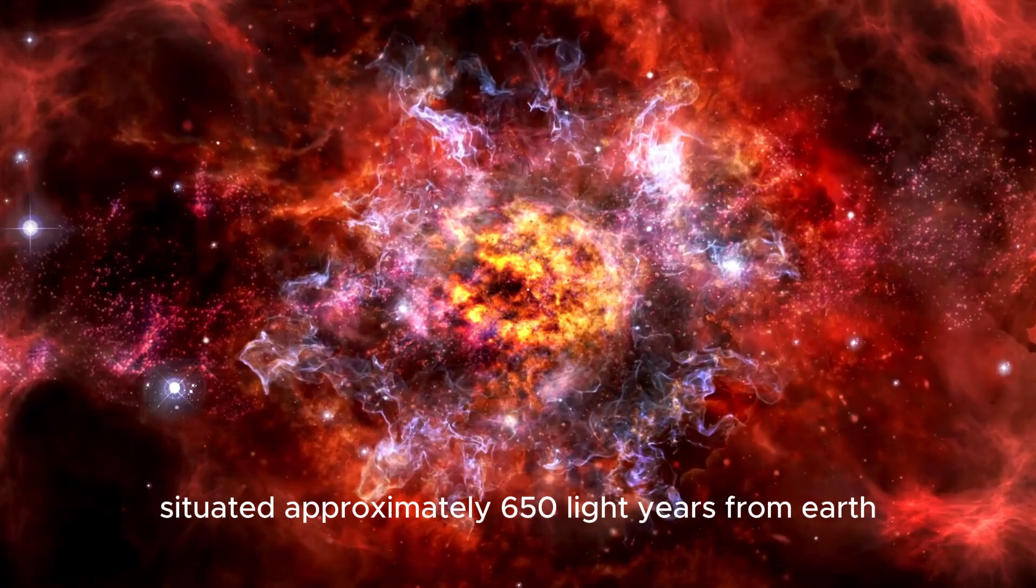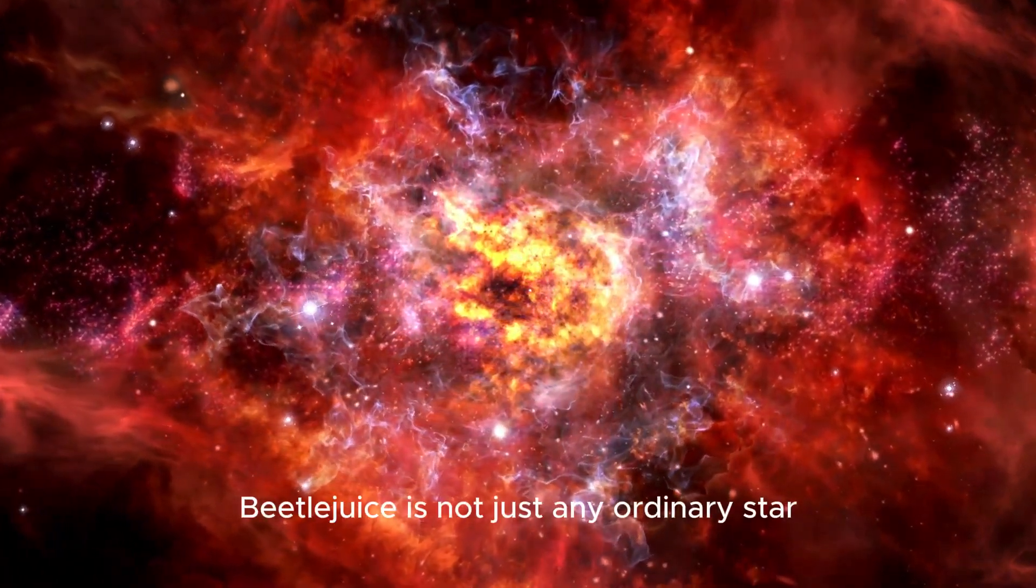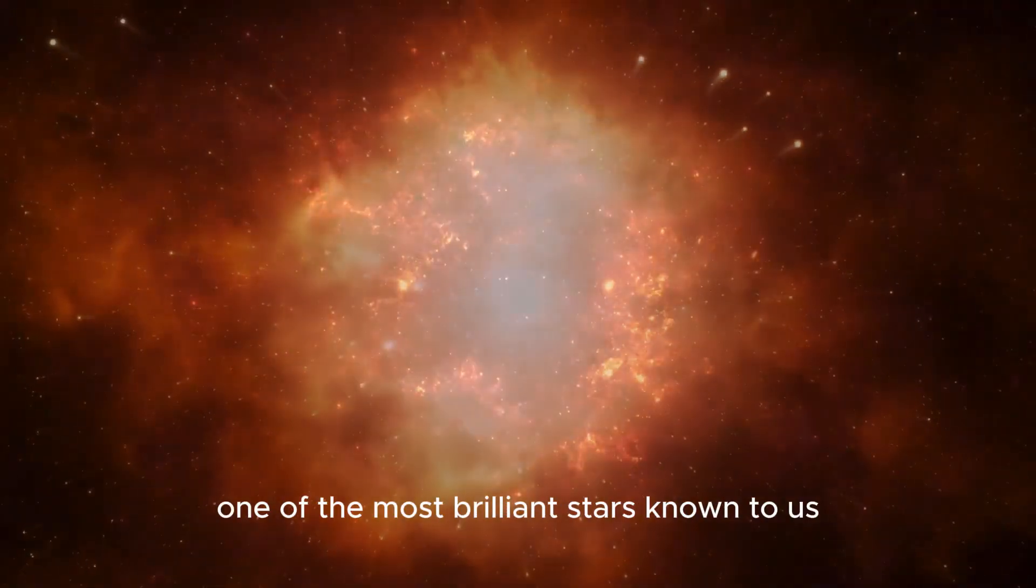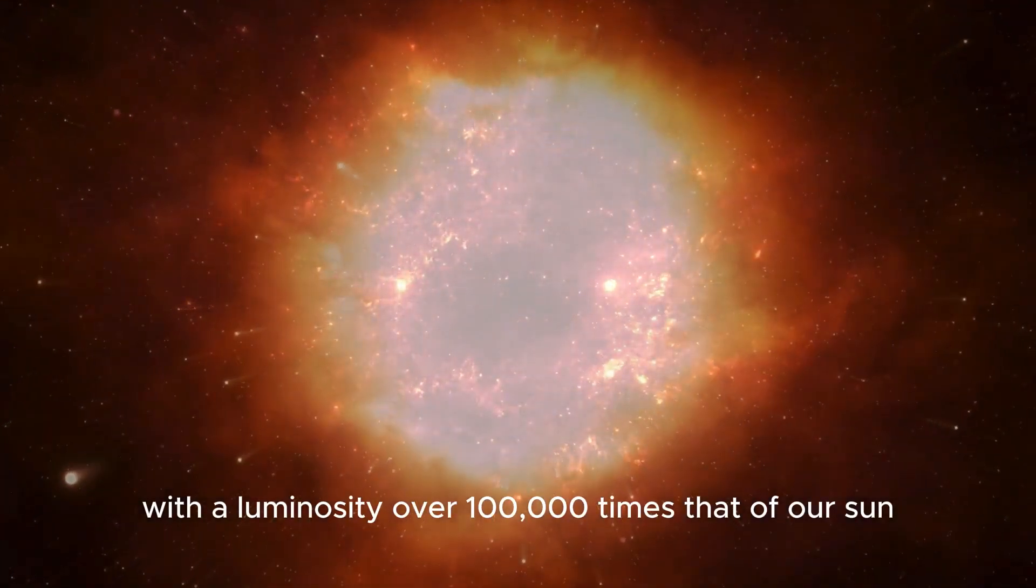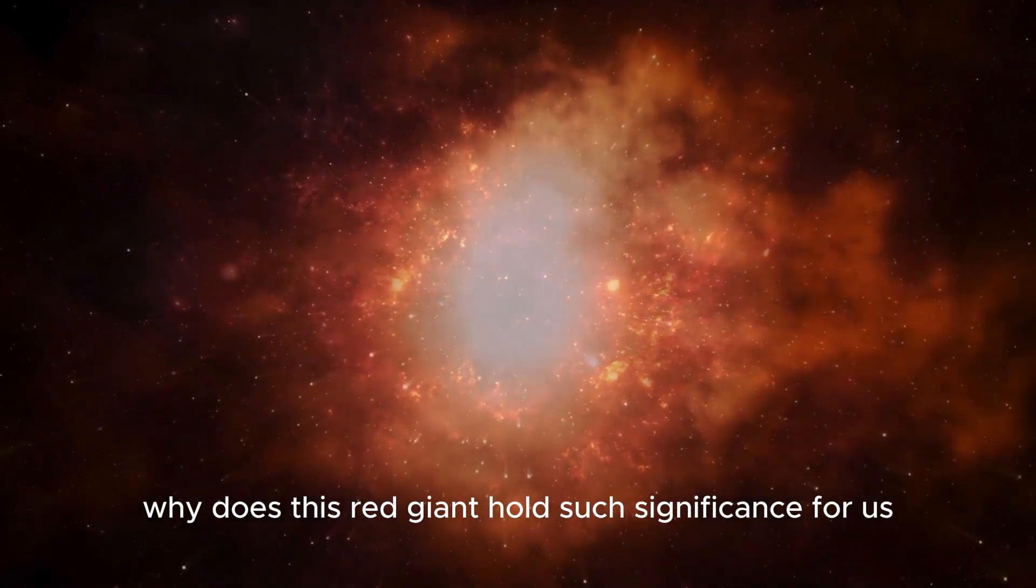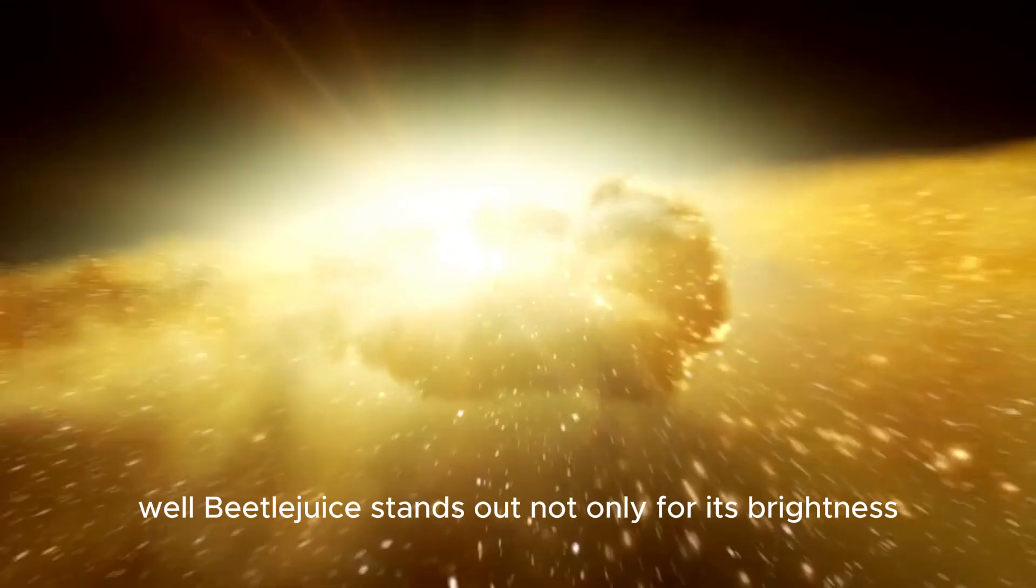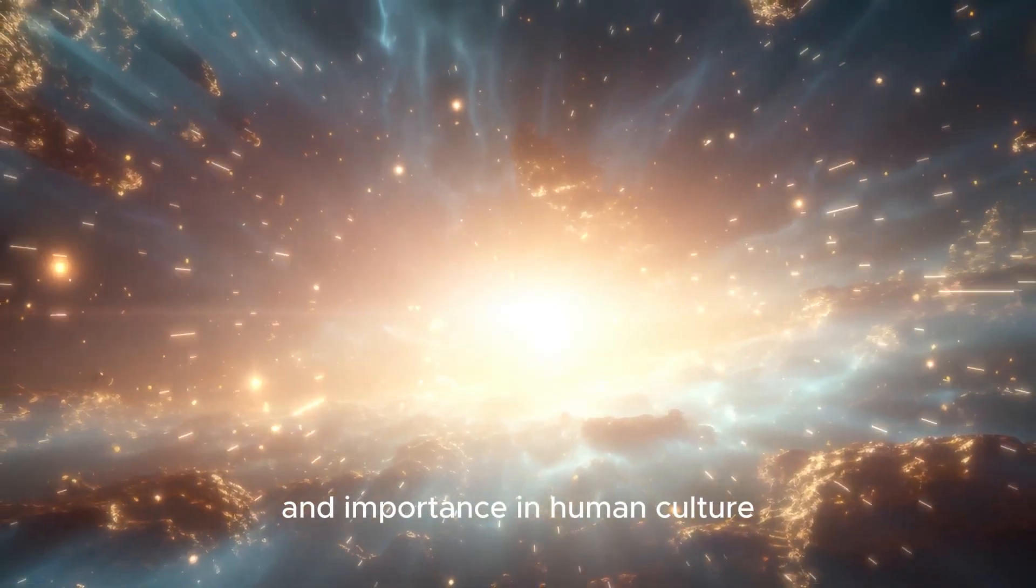Situated approximately 650 light-years from Earth in the Orion constellation, Betelgeuse is not just any ordinary star. It's a red supergiant, one of the most brilliant stars known to us, shining with a luminosity over 100,000 times that of our sun. But why does this red giant hold such significance for us? Betelgeuse stands out not only for its brightness, but also for its history and importance in human culture.